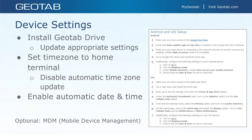The next step, once you have your hardware, is to install the Geotab Drive app and update a few settings to make sure the Drive app is always up to date and that the communication link between the Go device and the Drive app is always open. Changing these particular settings ensures everything runs smoothly for your drivers so they don't have to worry about manual updates. It is important to set the time zone to the driver's home terminal, which is the driver's reporting location, and then disable the automatic time zone updates. That keeps their logs set to the home terminal time zone as they cross over time zone lines. You also want to enable automatic date and time to make sure the logs are complete and accurate.